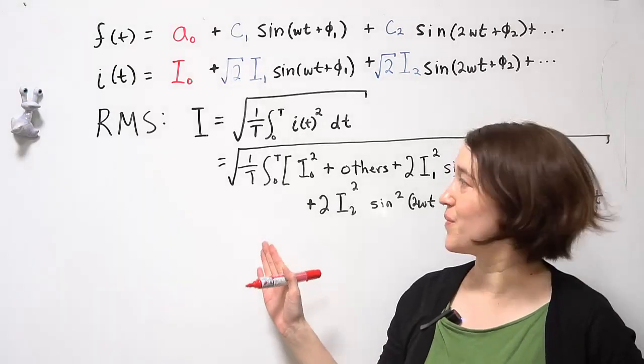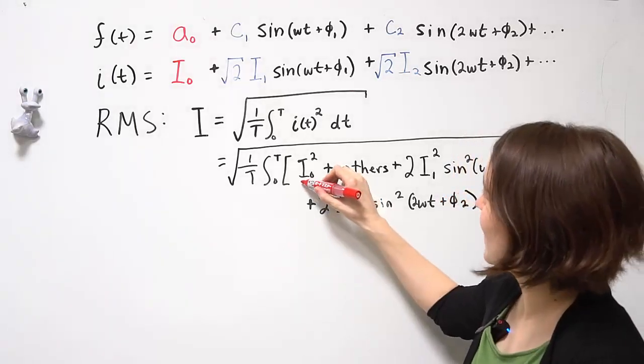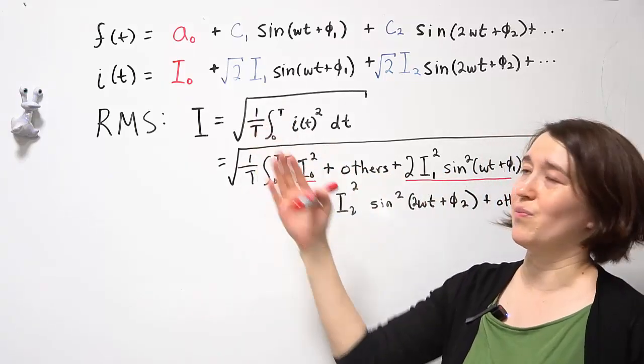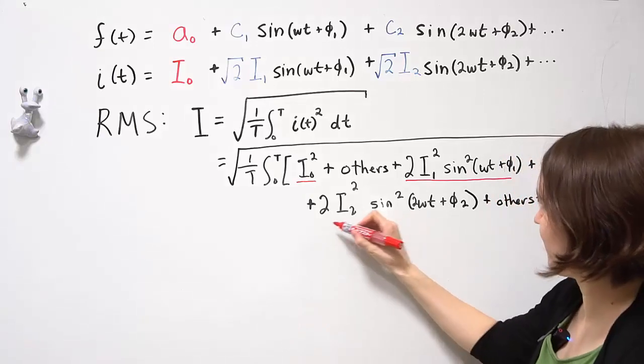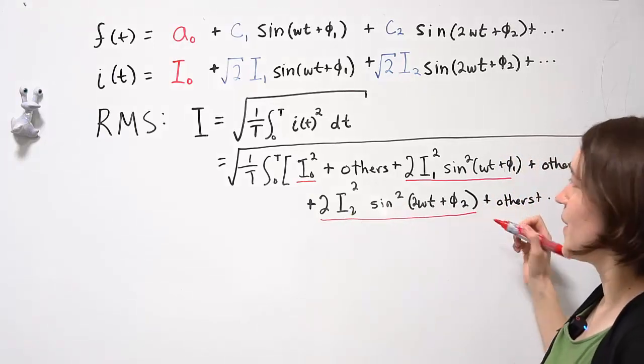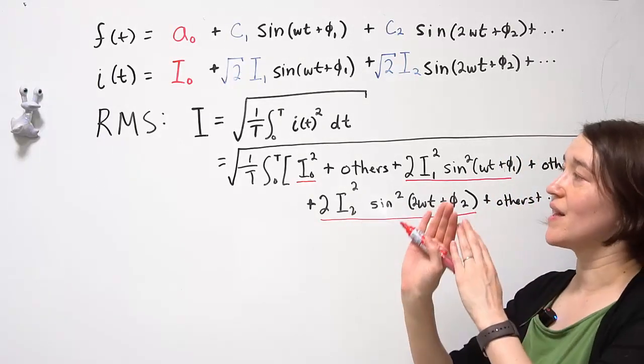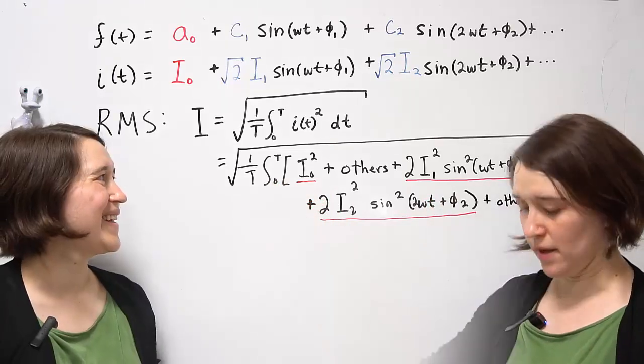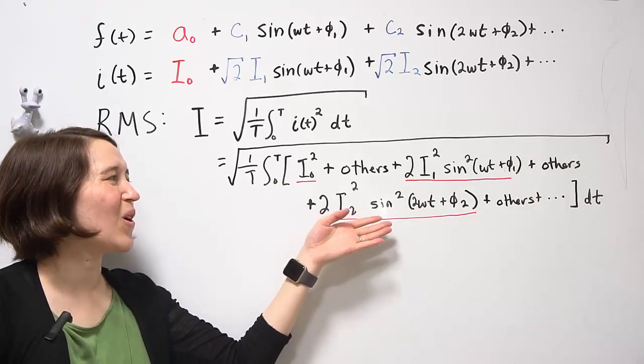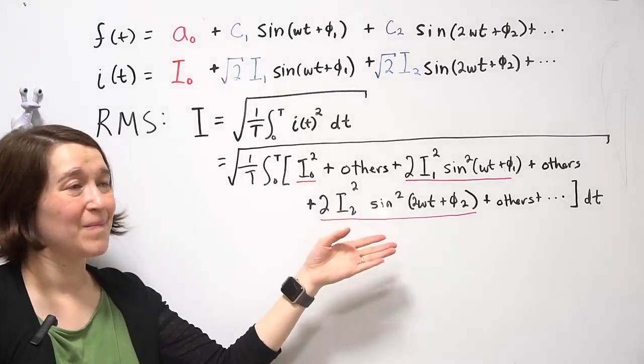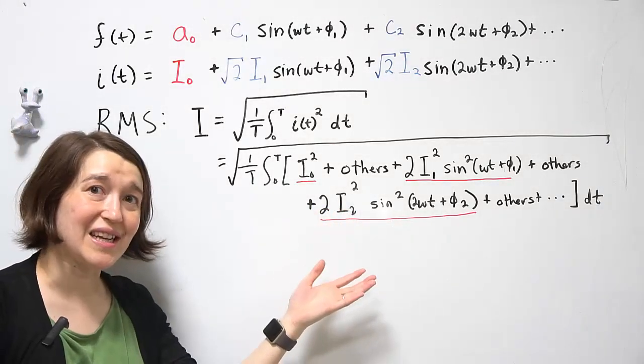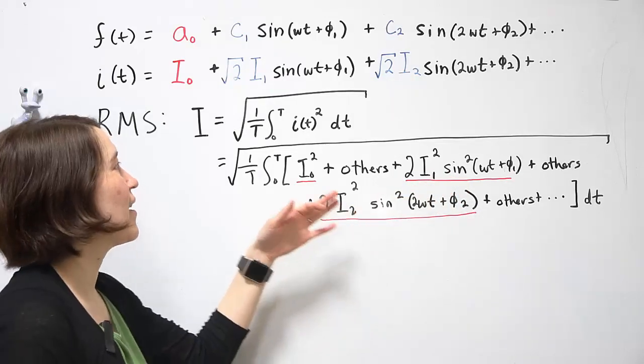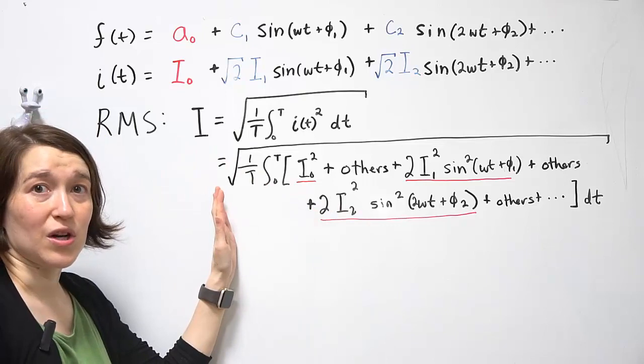The important terms here are going to be these ones, which are each of the terms multiplied by themselves. And all the other ones are going to cancel out to zero once we evaluate the mean. I'm not going to go through all the math here. But if you use a trig identity, you can solve for each of these equations, the sine squared, and evaluate this expression.